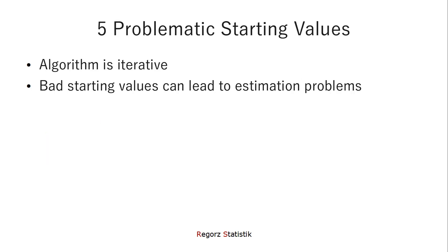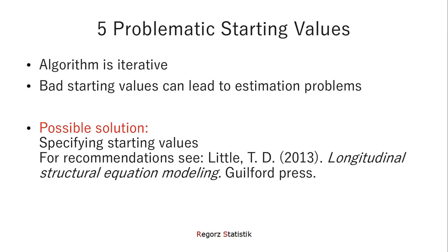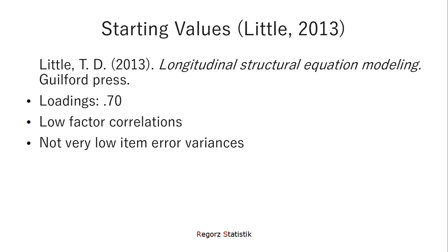Another source for convergence problems could be the starting values. The estimation algorithm in SEM and CFA is iterative. So you have starting values set by the system. And then the system tries to improve those values stepwise. But bad starting values can lead to estimation problems. A possible solution would be try to specify starting values. And for recommendations, I would look at Little 2013. Some guidelines in his book are try to set the loadings to 0.17, try to start with low factor correlations and not very low item error variances. And maybe your problem goes away.